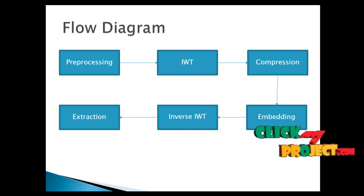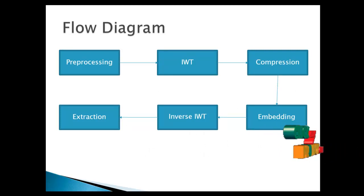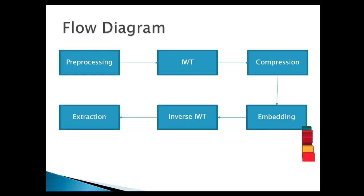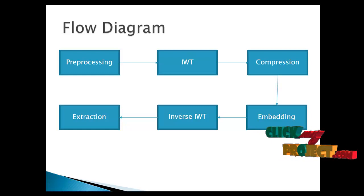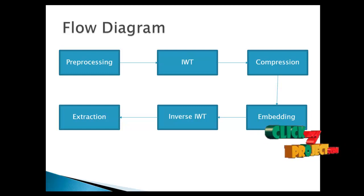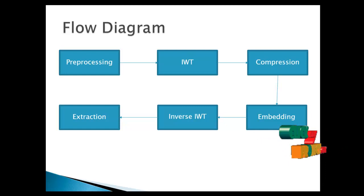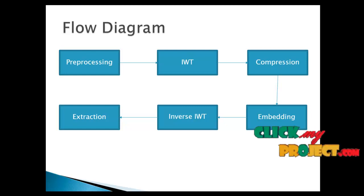Our proposed flow diagram: first, we take the input image through a preprocessing process. Then, using the IWT (Integer Wavelet Transform) method, compression is applied and data is hidden in the image. After that, embedding is performed based on LSB (Least Significant Bit) embedding. Finally, the inverse IWT method is applied, followed by extraction of the image through the watermarking process.